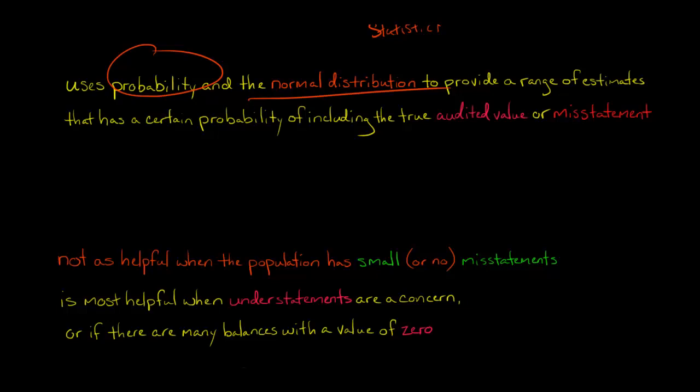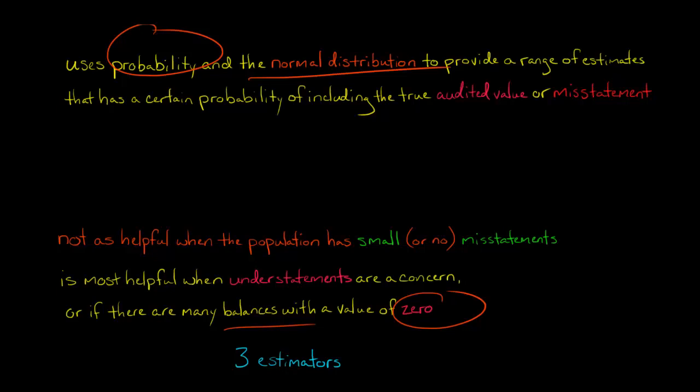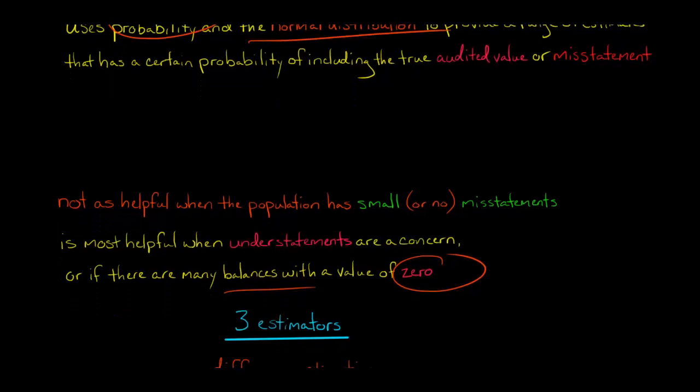We want to use classical variable sampling when we're looking for understatements, maybe understated liabilities, or if we have a lot of different balances with a value of zero, which could indicate some unrecorded liabilities. That's when classical variable sampling is most helpful. With monetary unit sampling, we're thinking more about overstatements like inventory and accounts receivable.